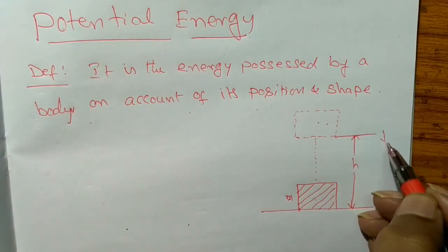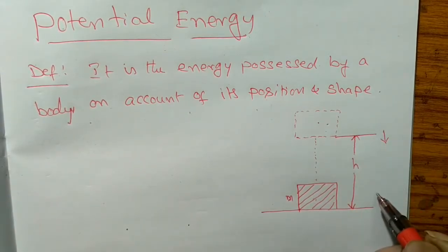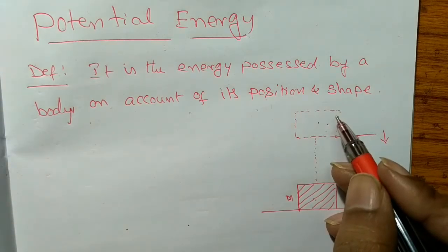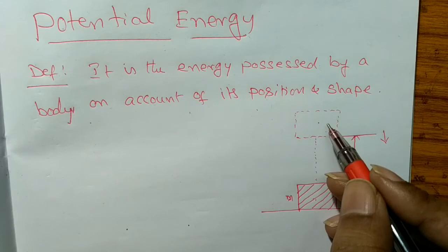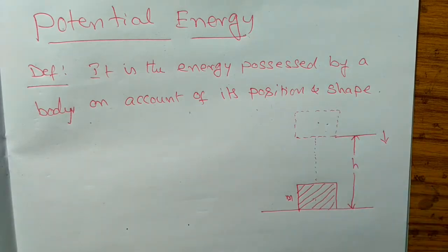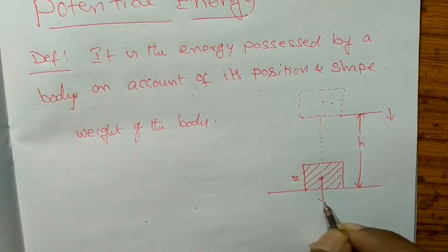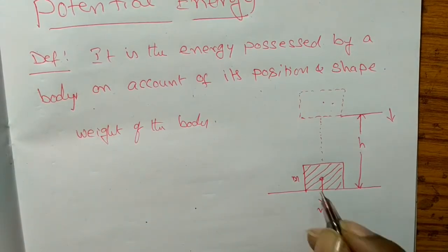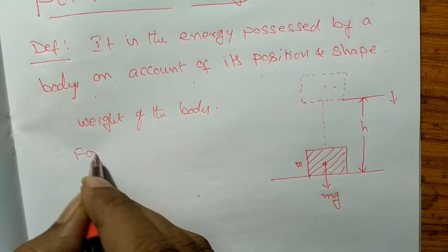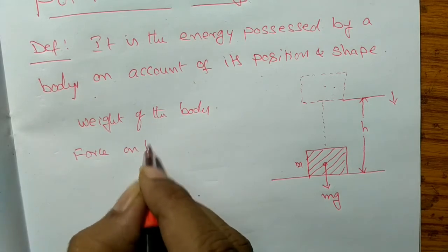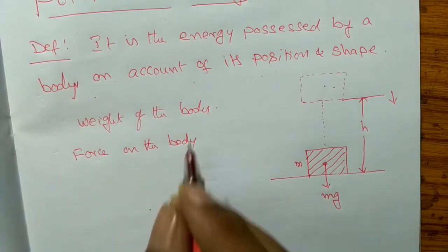The force of attraction is in the downward direction. The value of g acts downward, so work is done against gravity in the upward direction. The potential energy acts in the downward direction towards the ground.